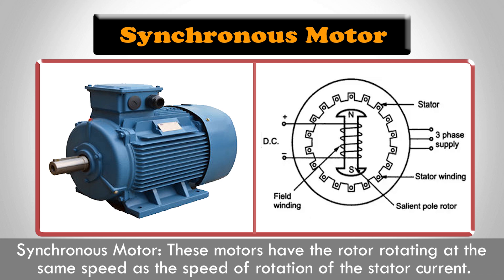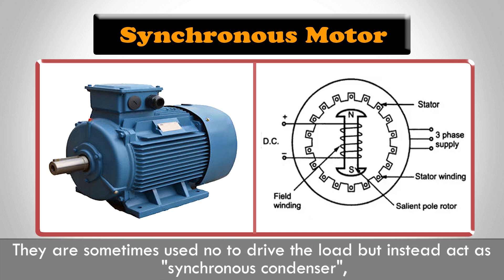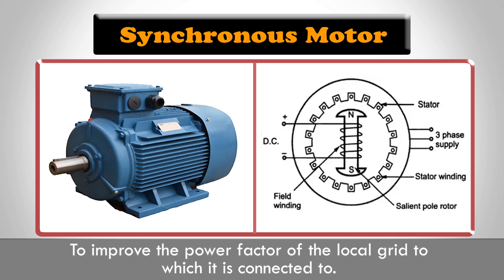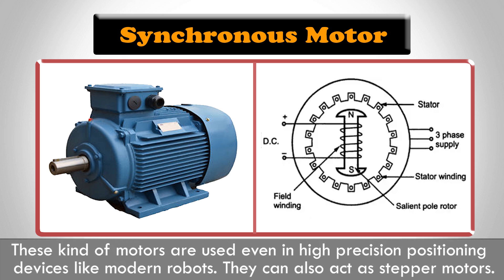Synchronous motors have the rotor rotating at the same speed as the speed of rotation of the stator current. In other words, these motors don't have slip with respect to the stator current. They are sometimes used not to drive a load but instead act as synchronous condensers to improve the power factor of the local grid to which they are connected. This kind of motor is also used in high precision positioning devices like modern robots, and they can also act as stepper motors.